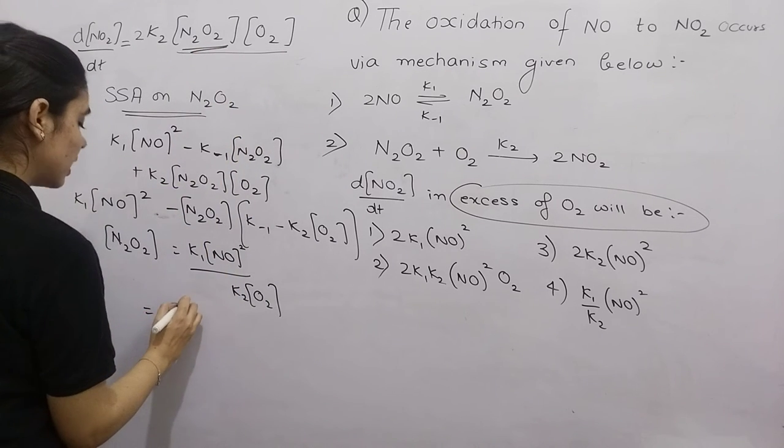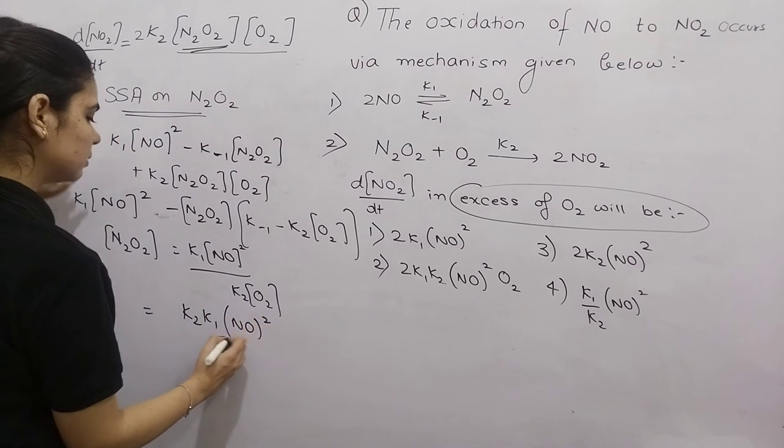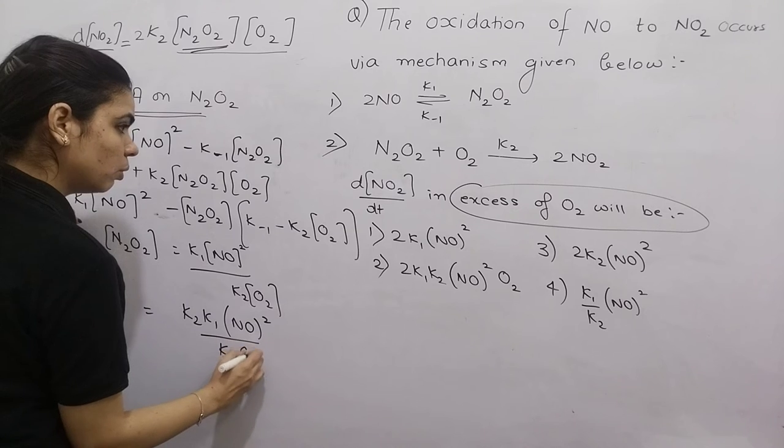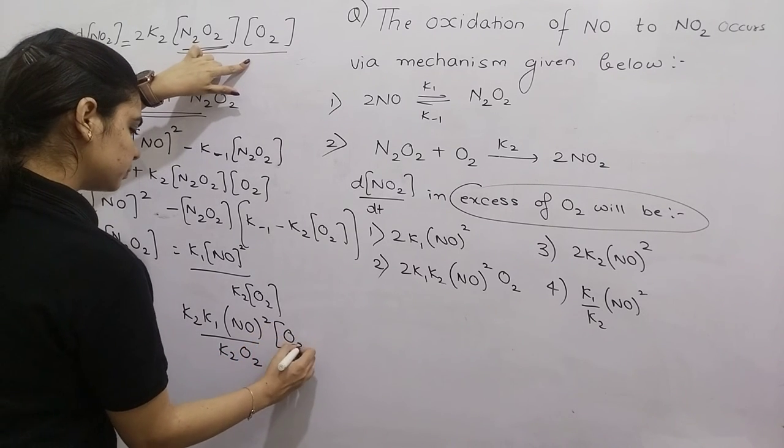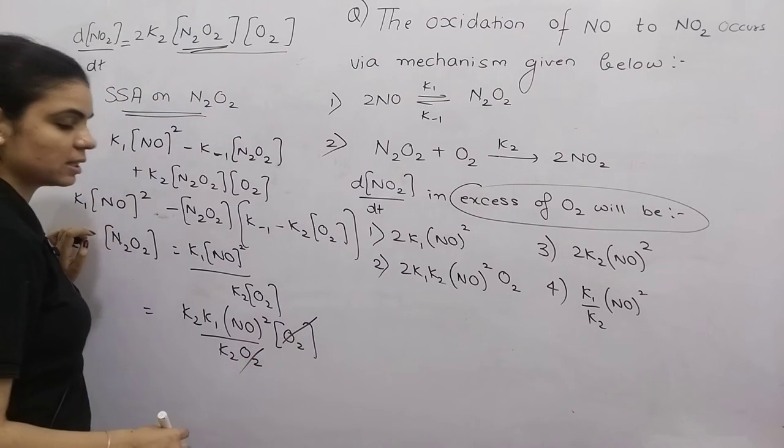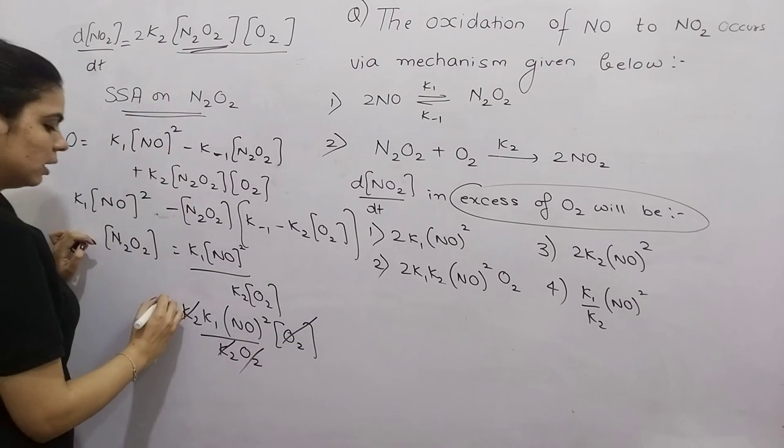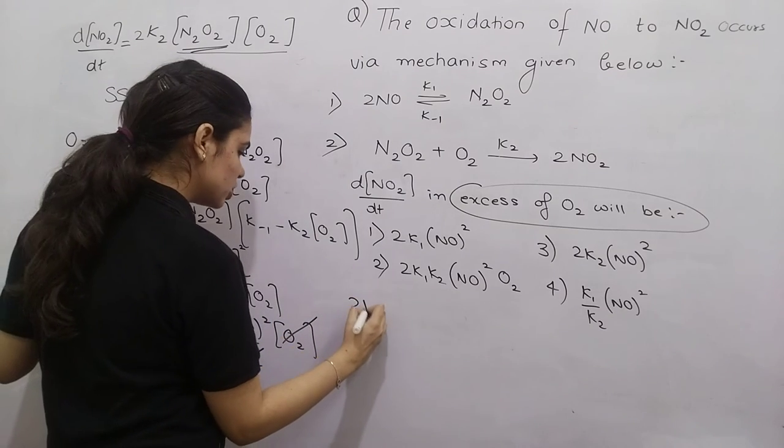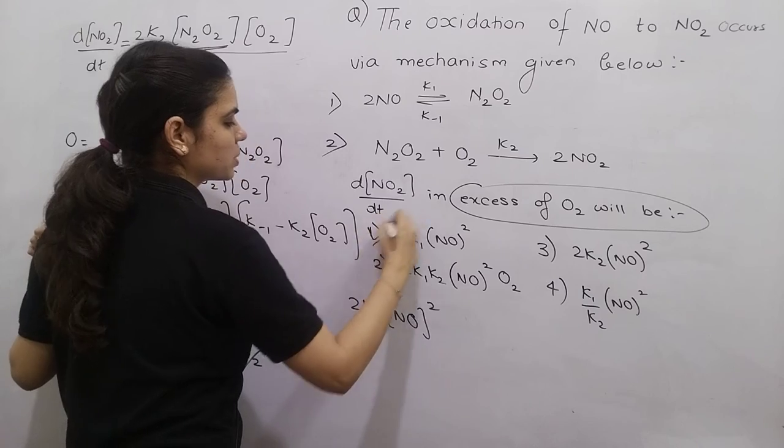Now I need to substitute this here. The final answer will be: 2K2K1[NO]^2[O2] divided by K2[O2]. The K2 cancels out with K2, and O2 cancels. So my final answer remaining is 2K1[NO]^2, which is given in option number 1.